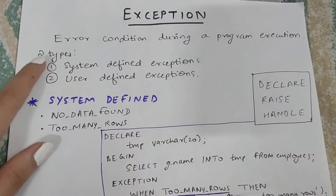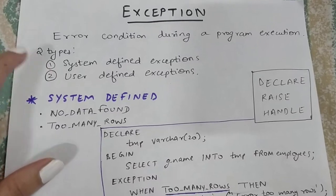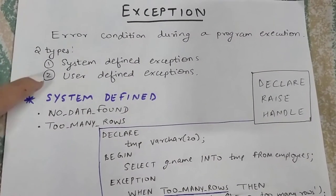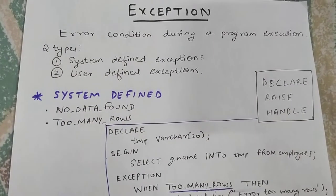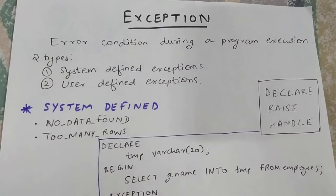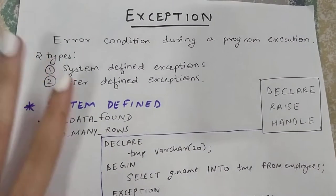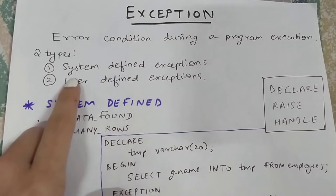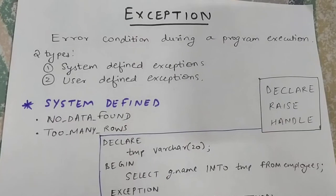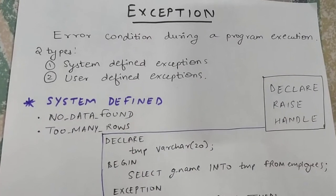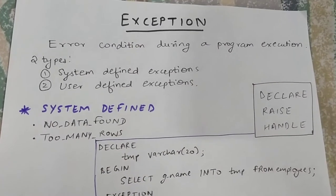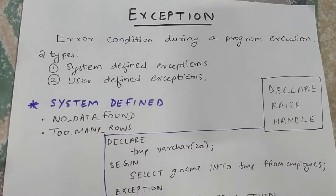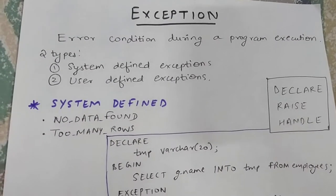So there are two types of exceptions in PL/SQL: system defined exceptions and user defined exceptions, which is quite self-explanatory. System defined exceptions are created by the system — they are already defined by Oracle — and user defined exceptions are defined by the programmer or any sort of user.